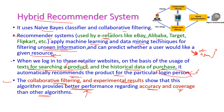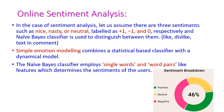The next important application is online sentiment analysis. Consider three sentiments: nice, nasty, or neutral — labeled as +1, -1, and 0 respectively. If it is positive (nice), +1 is assigned; if neutral, 0; if negative, -1. Based on these values, the Naive Bayes classifier will classify the data — determining how much is positive, how much is neutral, and how much is negative. Simple emotional modeling combines a statistical-based classifier with a dynamic-based model.